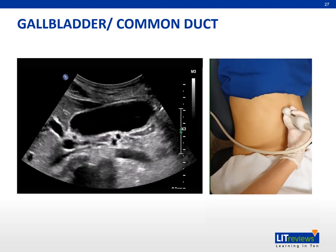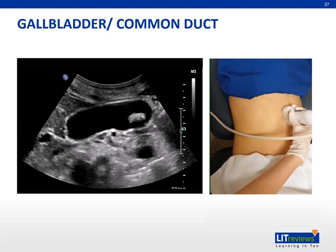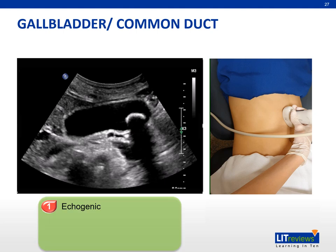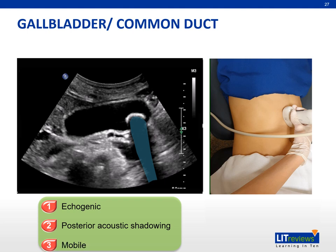The gallbladder is pear-shaped with a pencil-thin echogenic wall measuring under 3 mm, and a normal gallbladder should be entirely anechoic. In this patient, however, we see an echogenic focus casting strong posterior shadowing — these are typical features of a gallstone. A change in patient position should cause the stone to move.